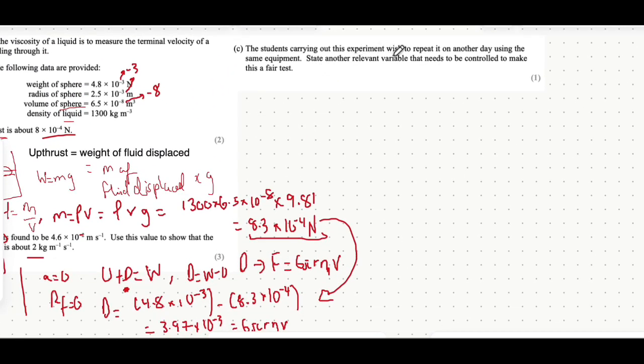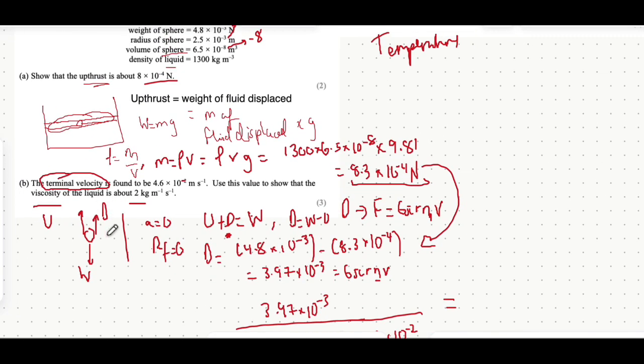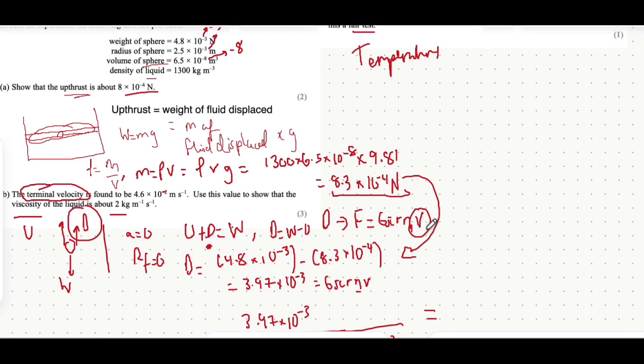The students carrying out this experiment wish to repeat it on another day using the same equipment. State another relevant variable that needs to be controlled to make this a fair test. To make it fair, we want to control something so it doesn't change anything. The temperature would be a very good answer, because if you increase the temperature of the liquid, that would affect the drag force. That affects the whole experiment.